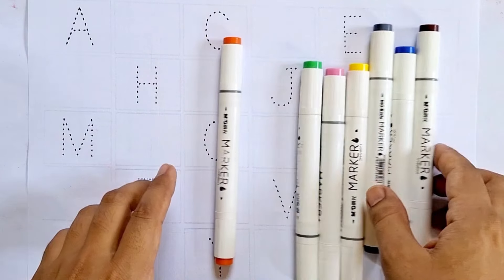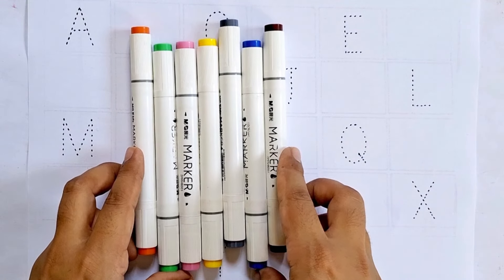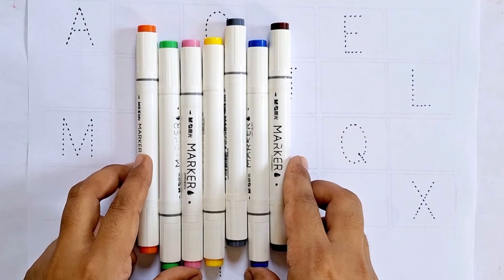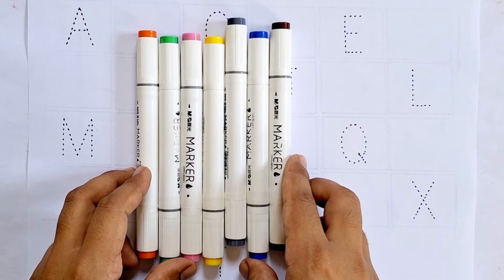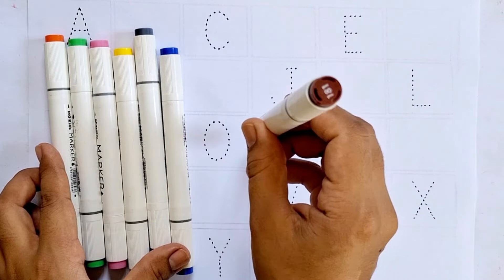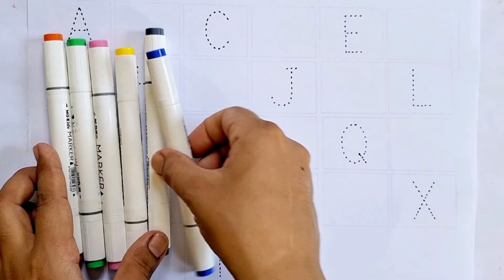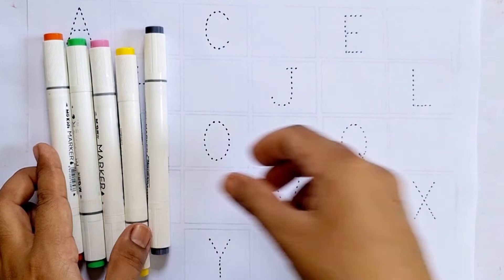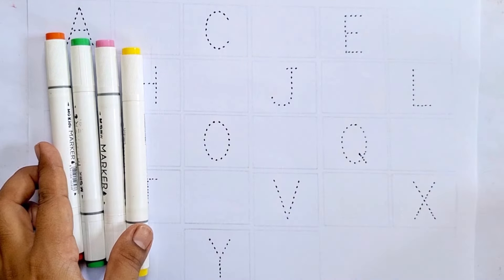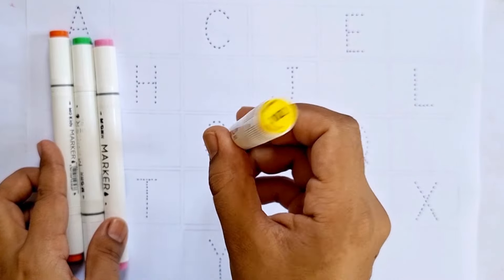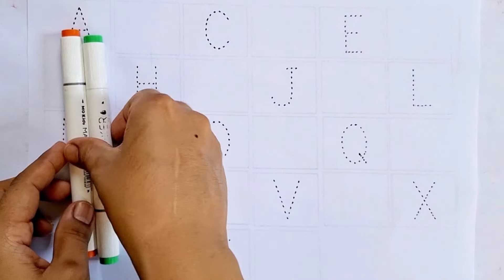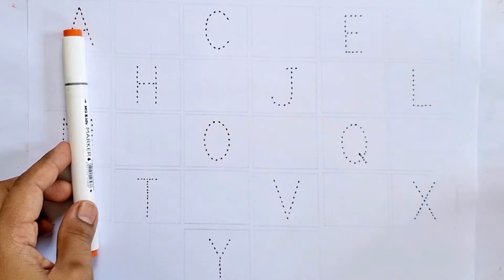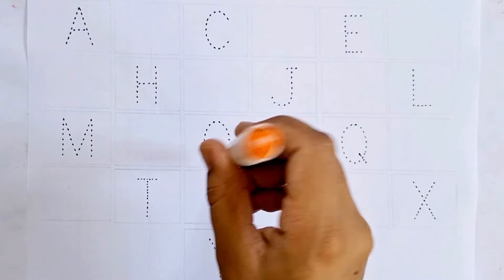Hello kids, how are you all? In today's video I'm going to teach you alphabets. Are you ready? Let's get started. But before we begin, let's learn some color names: brown color, dark blue color, gray color, yellow color, baby pink color, light green color, orange color.